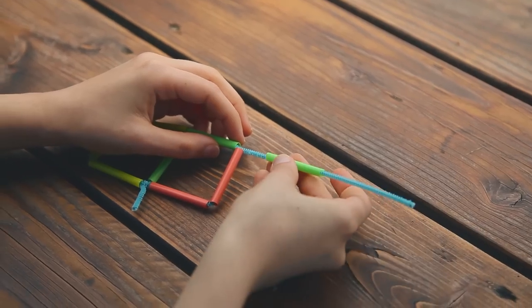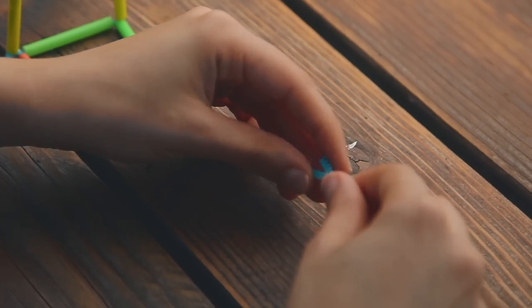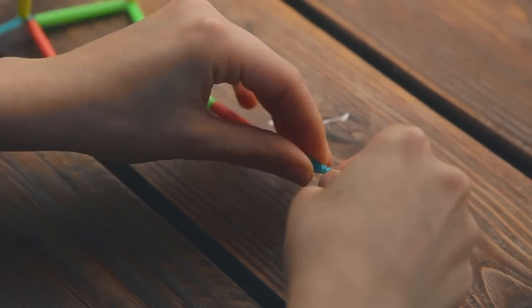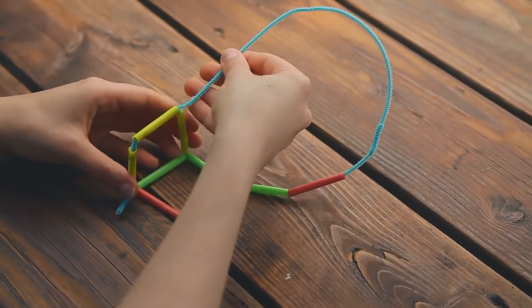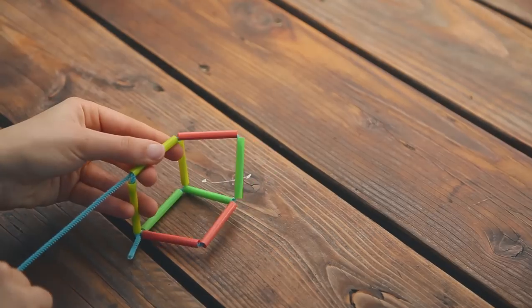Slide two more straws onto the pipe cleaner. If you run out of pipe cleaner, just make sure to add another one. Bend the first square up. Push the pipe cleaner through the straw of the first square to make your third square.